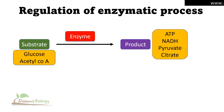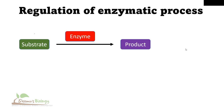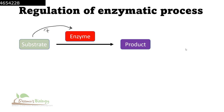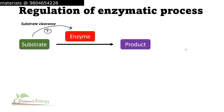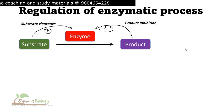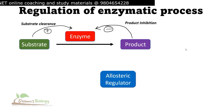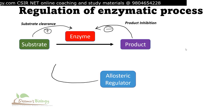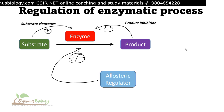All these enzymatic pathways are regulated in three different ways: substrate clearance, product inhibition, and allosteric regulation. Substrate clearance is when the substrate concentration is high, then the substrate is going to positively influence the enzymatic reaction. If the product concentration is high, it will always negatively influence the enzymatic reaction — we call it product inhibition. Finally, an allosteric regulator molecule can bind to the allosteric site of the enzyme and either positively or negatively regulate the enzyme activity.